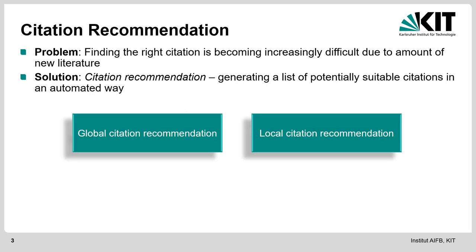In citation recommendation you get a ranked list of publications which might be suitable for citing in a specific context. We can differentiate between global citation recommendation and local citation recommendation. Global citation recommendation refers to the task where you have a text document like a scientific publication and you want to know which references are suitable — basically you want to re-predict the reference section. In the case of local citation recommendation, it's for a specific context, for example one sentence or up to three sentences in a scientific publication, where you want to back up specific concepts, statements, or claims.